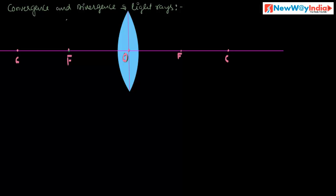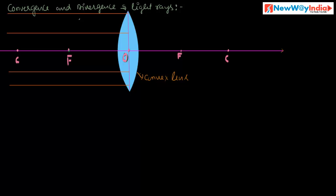Let us discuss convergence and divergence of light rays. In the case of a convex lens, this is the principal axis. Let us consider a beam of light traveling parallel to the principal axis as it strikes the convex lens.